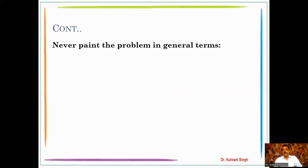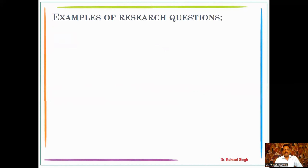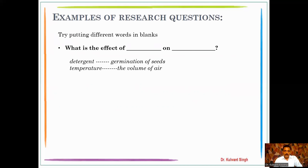Never present a problem in a vague way — our research problem should be specific. Never write in this way: 'little is known about this' or 'no research has dealt with this.' We have to go for concise and precise writing. For example, research questions can follow this format: 'What is the effect of this on this?' — for instance, 'What is the effect of detergent on the germination of seeds?' or 'What is the effect of temperature on the volume of air?'